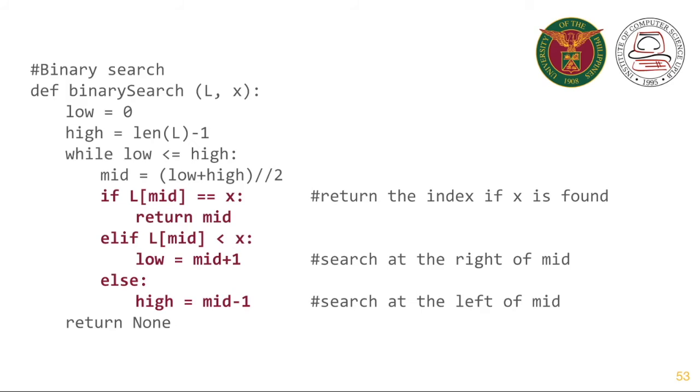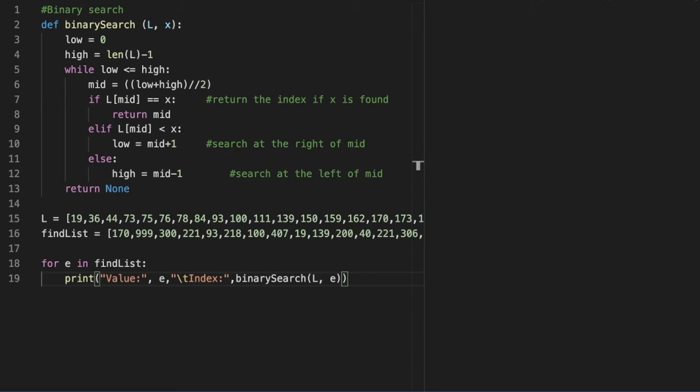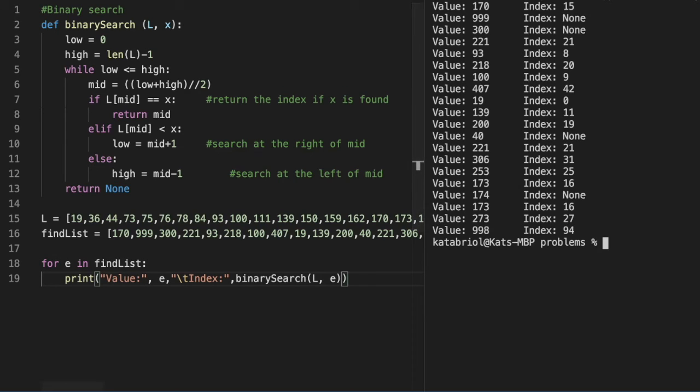Here's the Python program for the binary search algorithm. It accepts two parameters, the list and the value to be searched. So here's our binary search algorithm. Let's run it using the Python interpreter. So we have the values 170 at index 15, 999 which is not found in the list, 300 not found in the list, 221 at index 21, and so on.